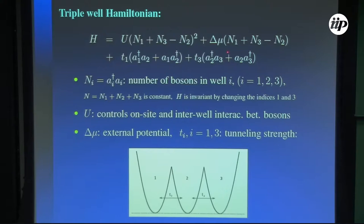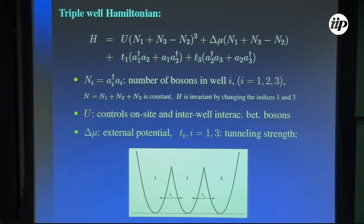This is the Hamiltonian for the integrable triple-well. We have three wells: n1 particles in well 1, n2 particles in well 2, n3 particles in well 3. The total number of particles is conserved. The U term controls on-site and interwell interaction between the bosons. T1 denotes the coupling for the tunneling of particles between wells 1 and 2, and T3 between wells 2 and 3. This model is solvable by the Bethe ansatz for any choice of the parameters, not only for specific choices.